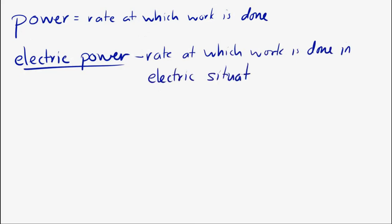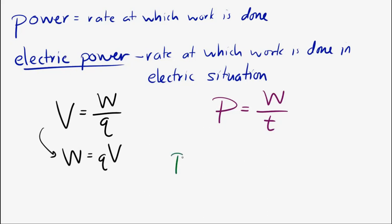So over here we have potential difference is equal to the work per charge. And for power, power is the rate at which work is done. So we've been writing that as work per time. And if we rearrange the potential difference equation, and then we make a substitution in the power equation, what we'll get is the power is equal to the potential difference times the amount of charge that's being moved divided by the time.